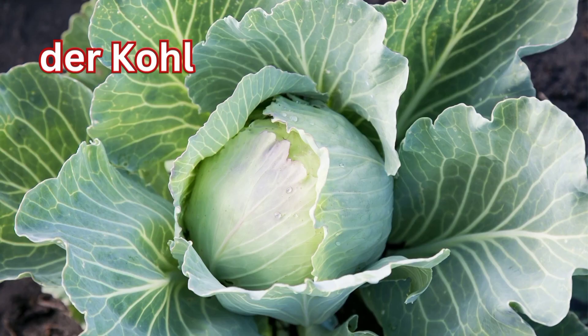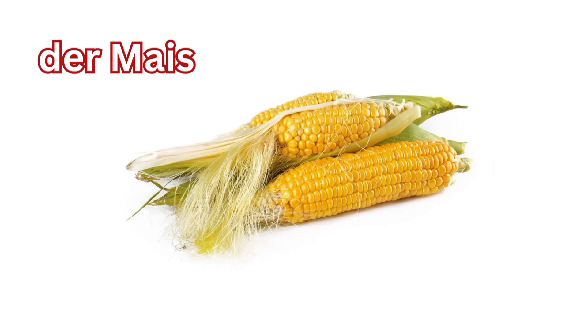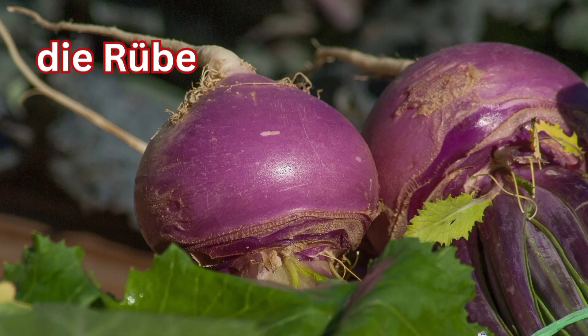Der Kohl — Cabbage. Der Mais — Corn. Die Rübe — Turnip.